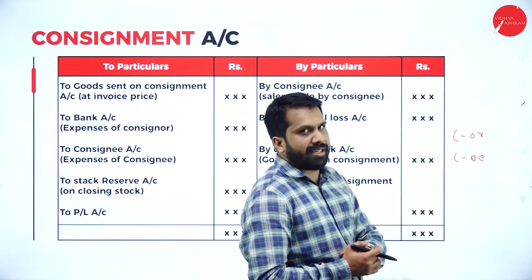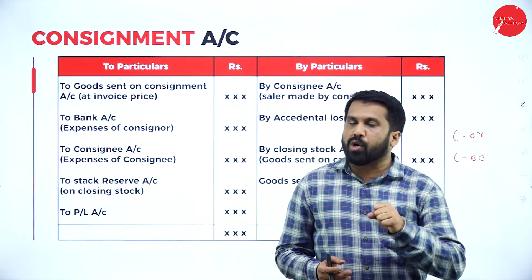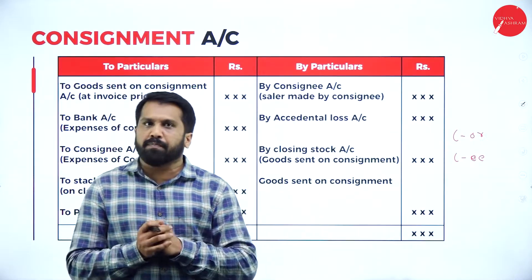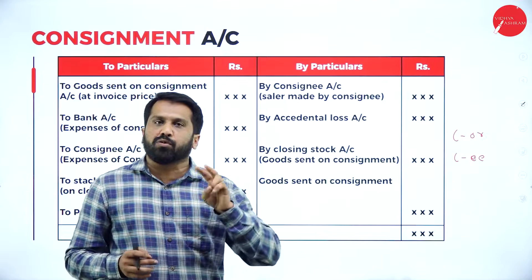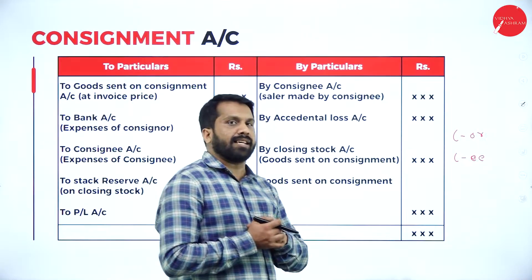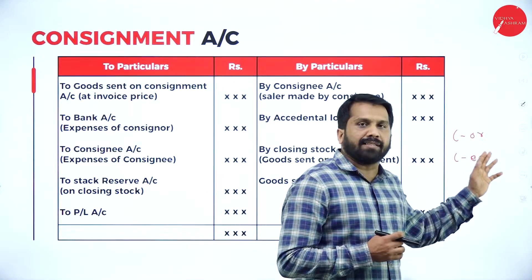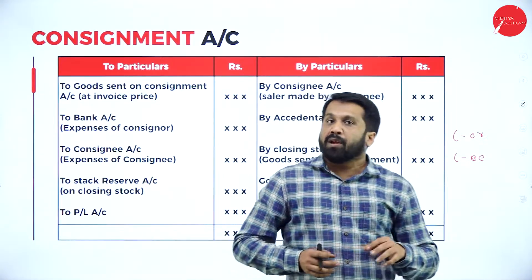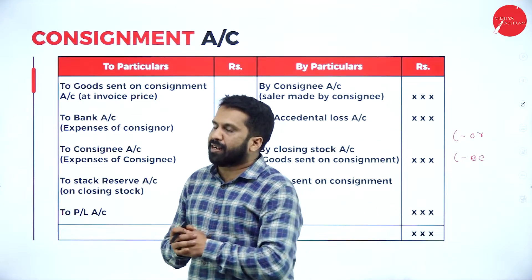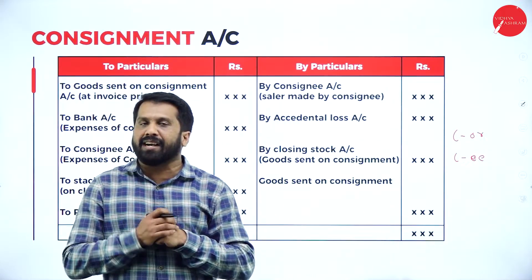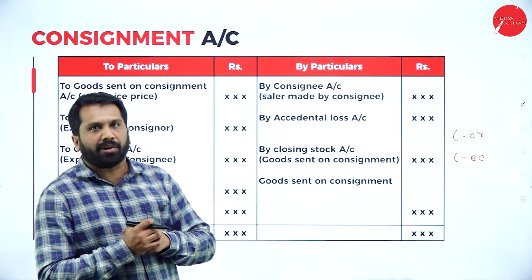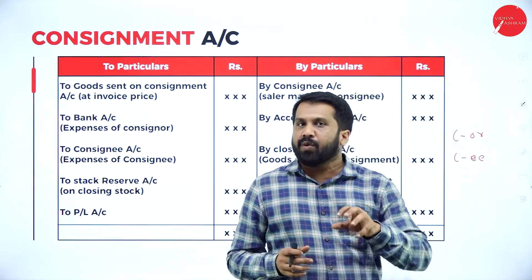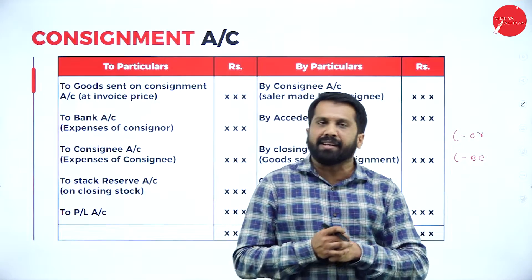The name itself says: consignor means owner; consignee means agent. The agreement between two persons — consignor and consignee — we call it as consignment account. Your two-mark question will be this: what do you mean by consignment account? The relationship between consignor and consignee is called consignment, and the agreement between them is called consignment account.